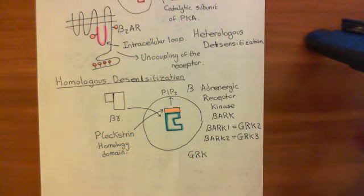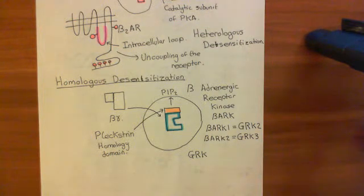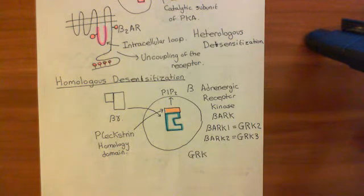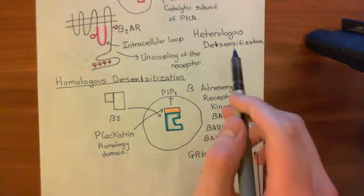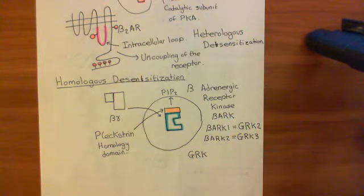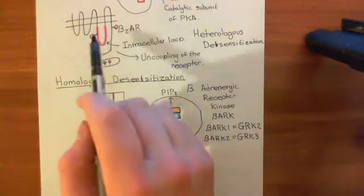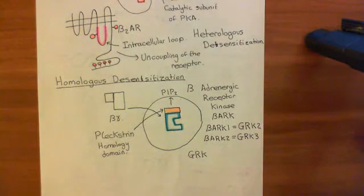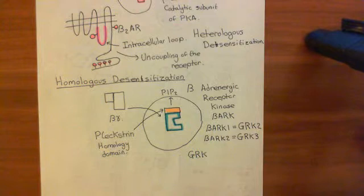Welcome to this next video in which we are discussing receptor desensitization, specifically the desensitization of the beta-2 adrenergic receptor. We've already seen heterologous desensitization, where we phosphorylated the intracellular loop of the beta-2 adrenergic receptor, as well as the early C-terminal domain, and this uncoupled the receptor from its GS heterotrimeric G protein.